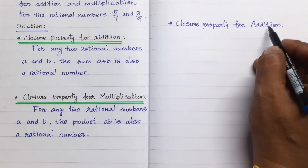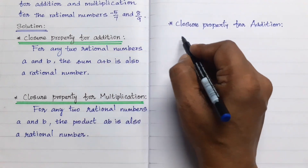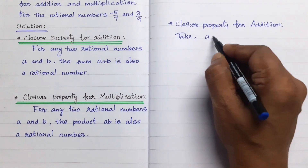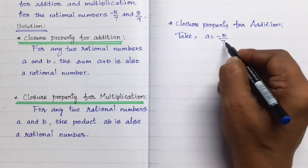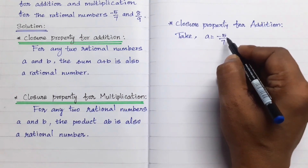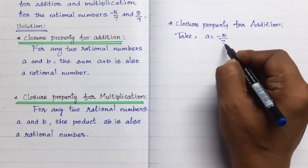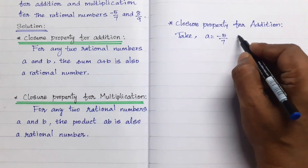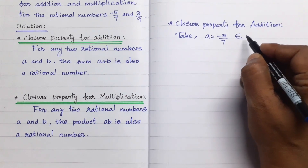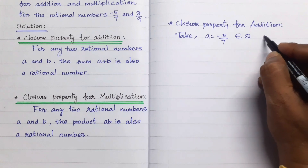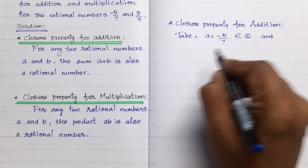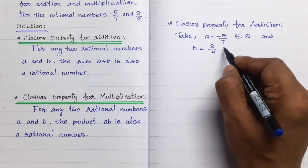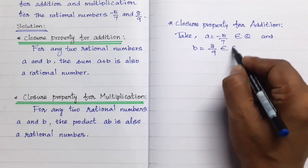Now, let's take a equal to minus 5 by 7. Minus 5 by 7 is of the form p by q, so it is a rational number and belongs to Q. And b equal to 8 by 9, it also belongs to Q.